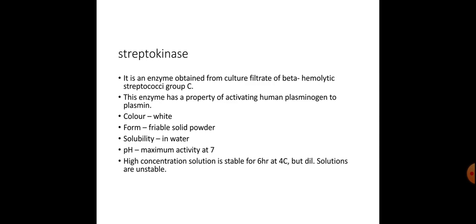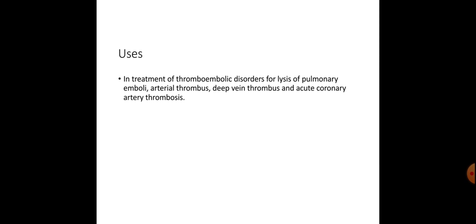Streptokinase is an enzyme obtained from culture filtrate of beta-hemolytic Streptococci group C. This enzyme has the property of activating human plasminogen to plasmin. Color: white; form: friable solid powder; solubility: in water; maximum activity at pH 7. High concentration solutions are stable for six hours at four degrees Celsius, but dilute solutions are unstable. Uses: treatment of thromboembolic disorders, lysis of pulmonary emboli, arterial thrombosis, and acute coronary artery thrombosis.